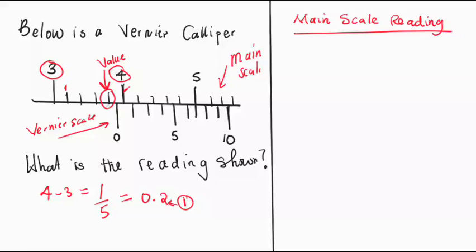So 3.2, 3.4, 3.6, 3.8. So this is 3.8. Let me just say centimeters and put millimeters here. 3.8 centimeters.